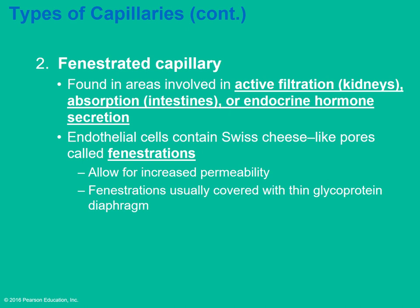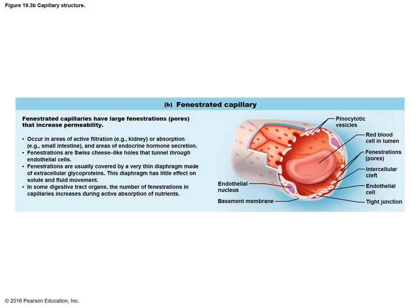Fenestrated capillaries are found where there is a lot of movement in and out, such as filtration in the kidneys, absorption in the intestines, and endocrine hormone secretion. The endothelial cells contain fenestrations — a fancy way of saying they have pores, like holes in Swiss cheese. This allows for increased permeability and increased movement of fluids in both directions: out of the capillaries into interstitial fluid and back into the blood.